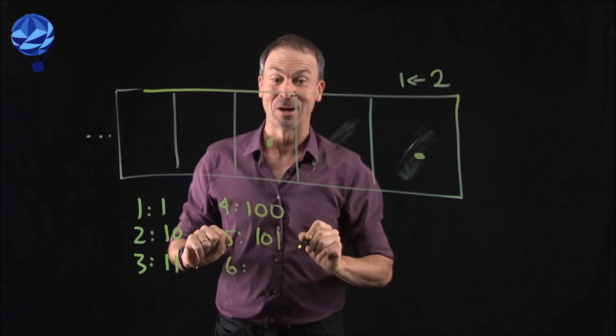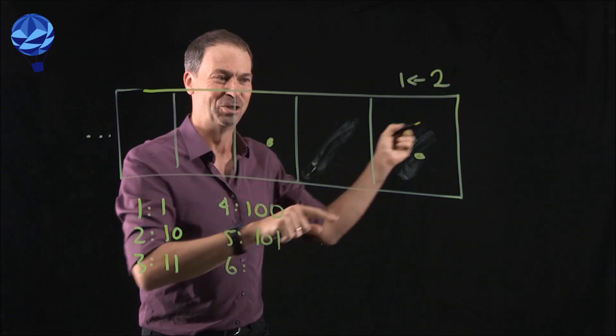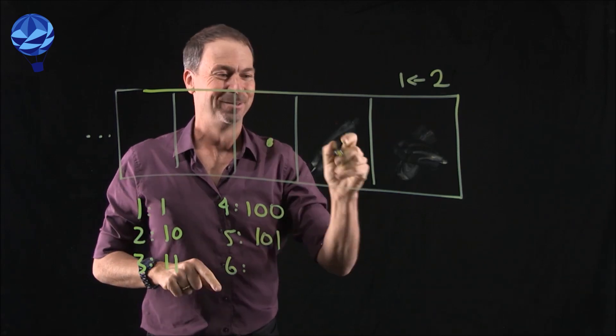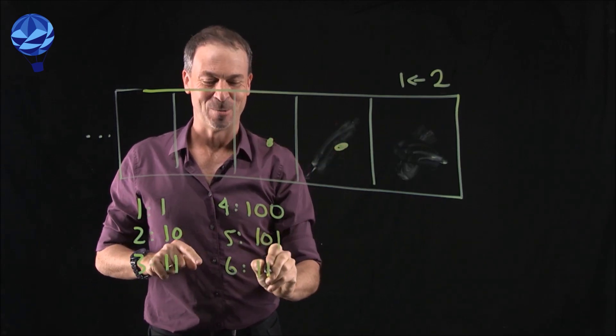How about six? Can you see what the code for six is going to be? Zoom. Kaboom! Dot. One, one, zero.